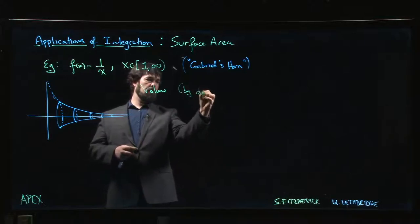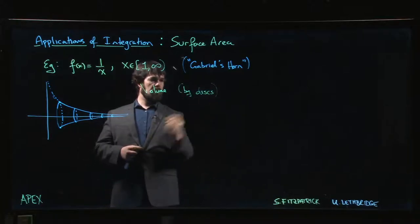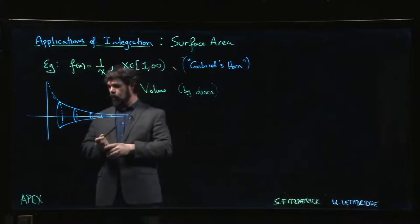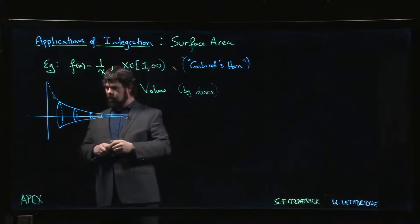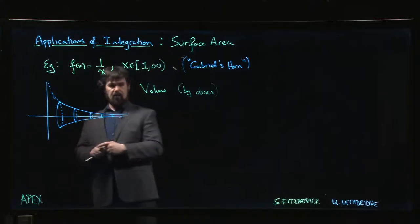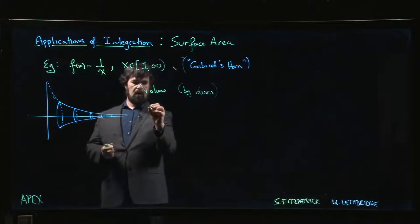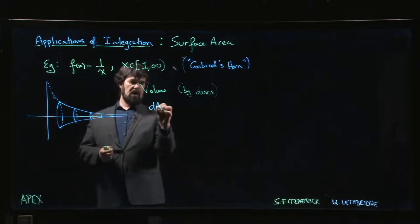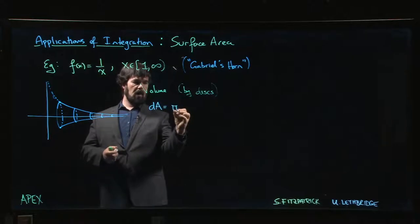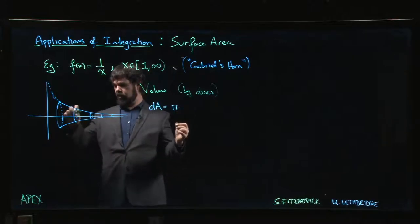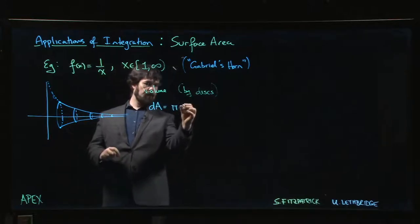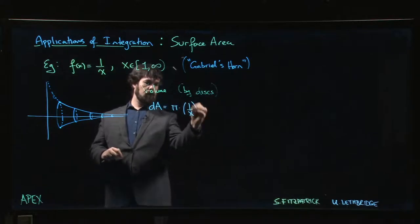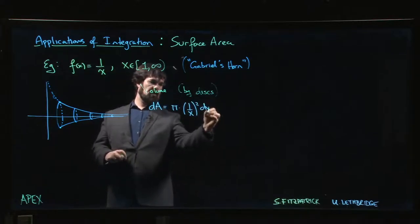We're going to calculate the volume using disks. Well, each disk, the area of each disk, dA if you like, is going to be π times the radius, which is 1 over x, times dx.